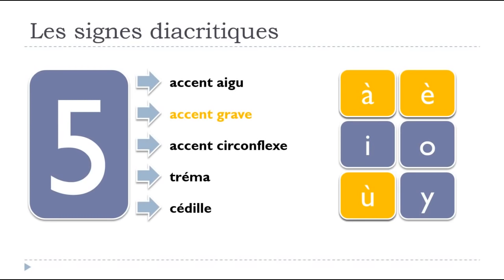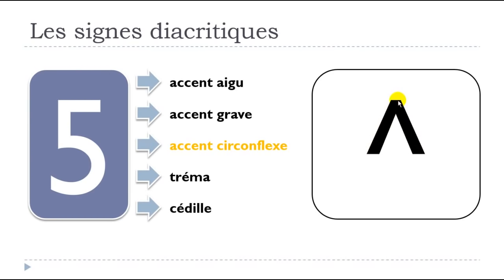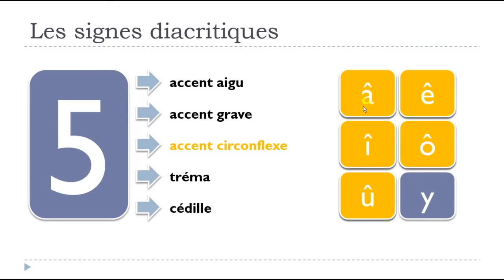After that you get l'accent circonflexe — it's like a little roof, like a little hat. And it will come on the top of A, E, I, O, and U.